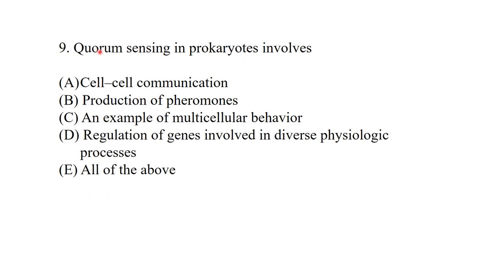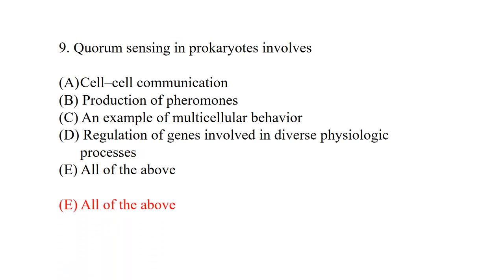Quorum sensing in prokaryotes involves: cell-to-cell communication, production of pheromones, an example of multicellular behavior, and regulation of genes involved in diverse physiological processes. All of the above is the best answer for quorum sensing.